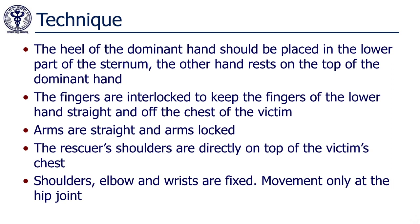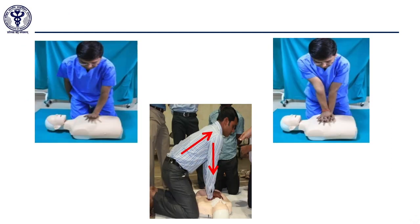The dominant hand should be placed on the chest wall first, in the lower part of the sternum. The second hand should be placed over the first hand with the fingers interlocked and off the victim's chest, as demonstrated in the pictures. The rescuer's shoulders should be directly on top of the victim's chest as demonstrated in the lower picture.